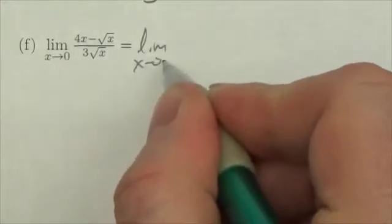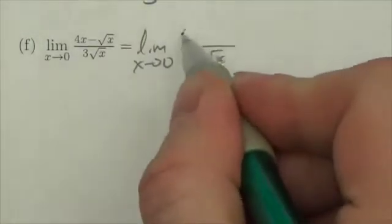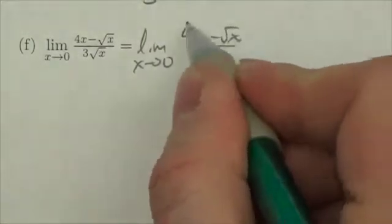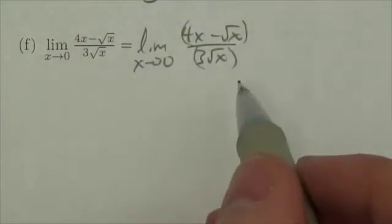So I'm gonna take the limit as x approaches zero. Remember you have to keep writing that. You have to keep writing the limit as x approaches zero until you plug in the zero. Once you plug in the zero you don't have to write that anymore.